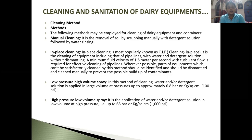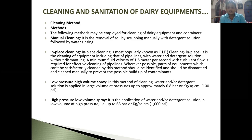There are lots of methods for cleaning. First is manual cleaning — the removal of soil by scrubbing manually with detergent solutions followed by water rinsing. Cleaning In Place, popularly known as CIP, is the most important method. In CIP, equipment including pipelines is cleaned with water and detergent solution without dismantling. A minimum fluid velocity of 1.5 meters per second with turbulent flow is required for effective cleaning.